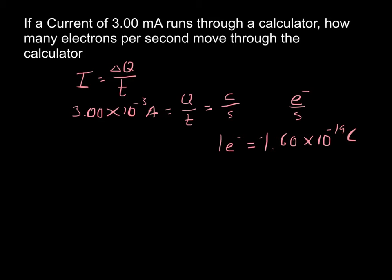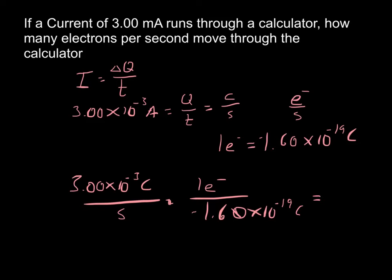So from here, this just kind of becomes a unit conversion problem. I have 3.00 times 10 to the negative third coulombs per second, and one electron is equivalent to negative 1.60 times 10 to the negative 19th coulombs. So if we multiply those two things together, my coulombs are going to cancel out, and I'm left with electrons per second, which is what I'm looking for.